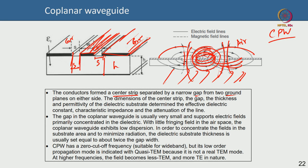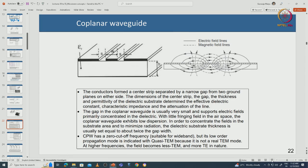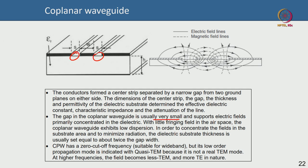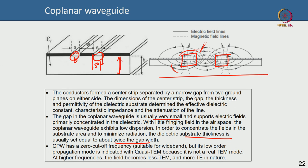CPW is mostly used for on-wafer measurement enablement. The small gap s supports electric fields primarily concentrated in the dielectric, with some fringing in the air above which is the radiative part. To minimize radiation and keep most of the signal propagating inside the substrate, the thickness of the substrate should be about two times the gap — for example, if the gap is 50 microns the substrate should be around 100 microns thick.